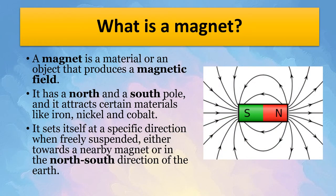A magnet is a material or an object that produces a magnetic field. It has a north and a south pole and it attracts certain materials like iron, nickel and cobalt. It sets itself at a specific direction when freely suspended, either towards a nearby magnet or in the north-south direction of the earth.